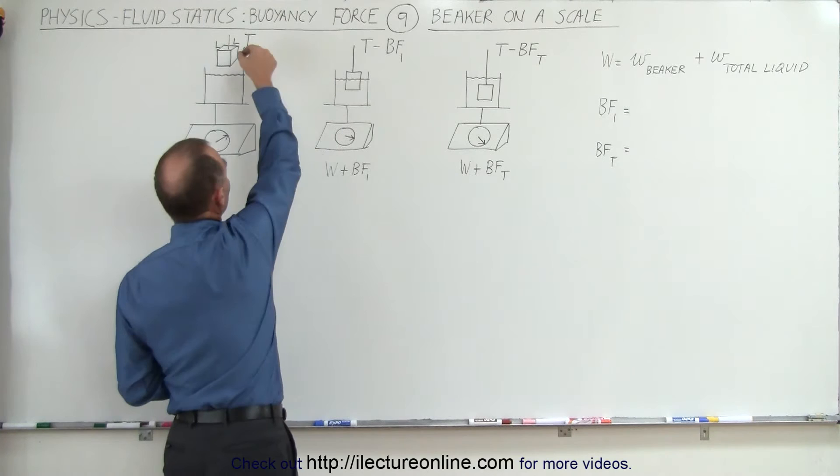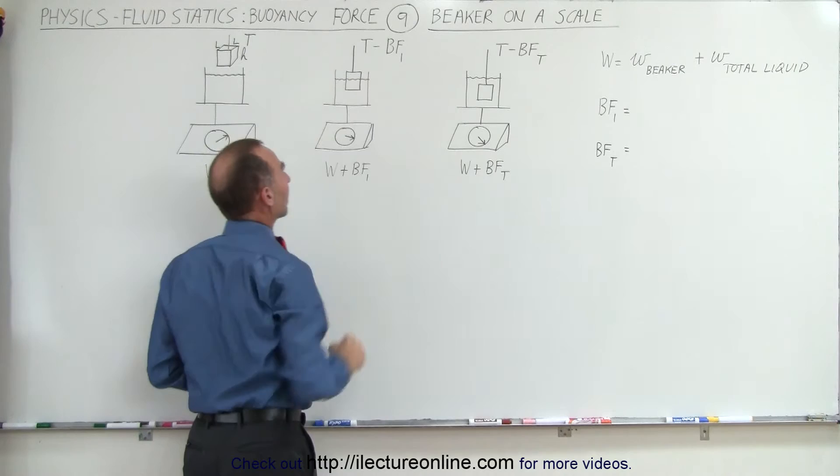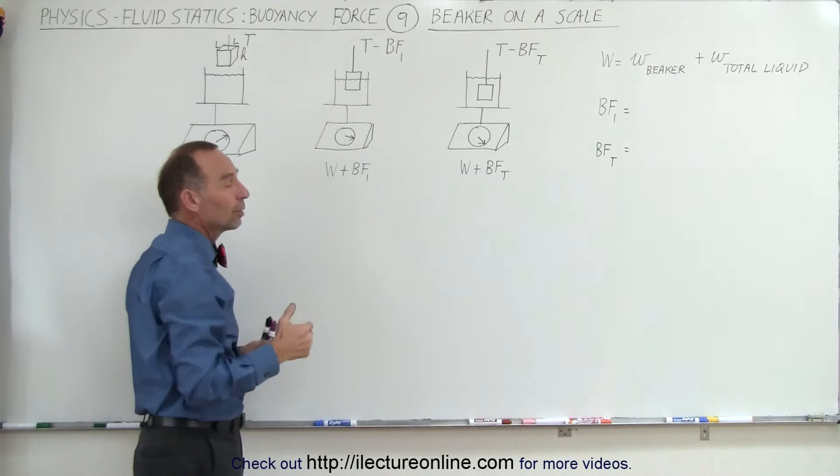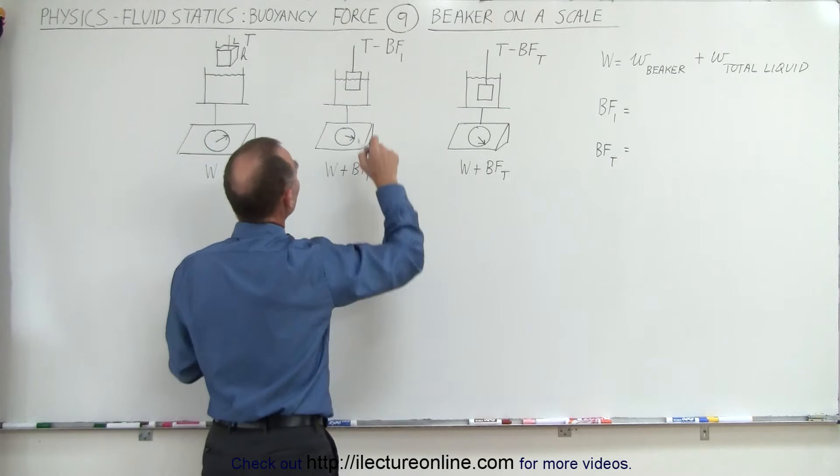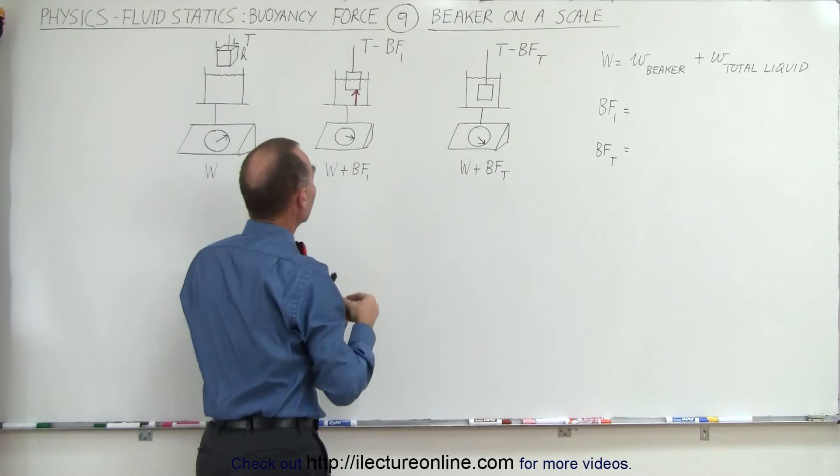Now what happens when we have the object suspended from a string and we bring it down so that a portion of it is inside the liquid? Let's assume that the density of the object is greater than the density of the liquid, so if the string wasn't there it would simply sink to the bottom. What are we going to read on the scale? Notice that there will be an additional buoyancy force pushing up against the object simply because we've suspended it.